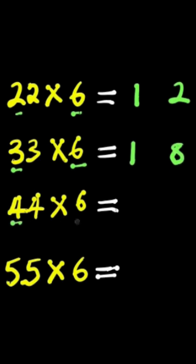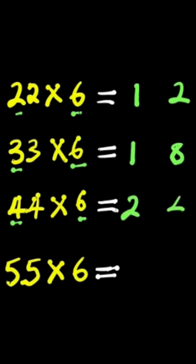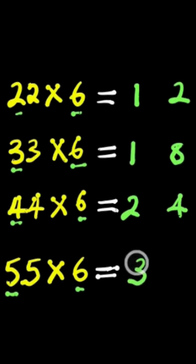4 times 6. We have 24: 2, 4. 5 times 6. We have 30: 3, 0.